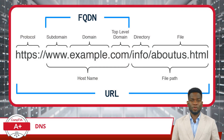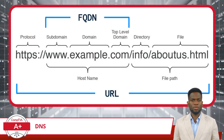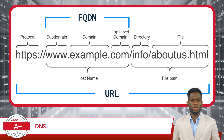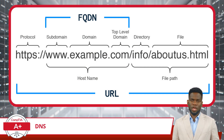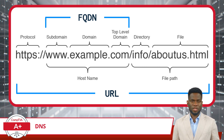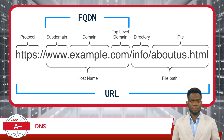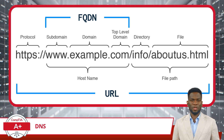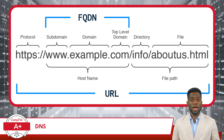How exactly does DNS convert a fully qualified domain name into an IP address? Let's break it down, starting with what makes up an FQDN. An FQDN is a complete address used to access a specific device across the Internet, like a web server. It's composed of several parts, including an optional subdomain or subdomains, a domain name, and a top-level domain.